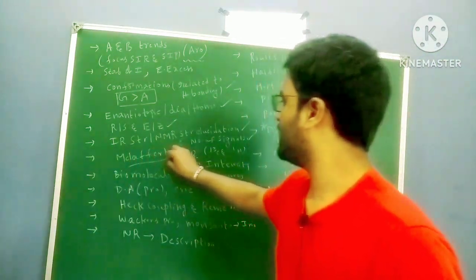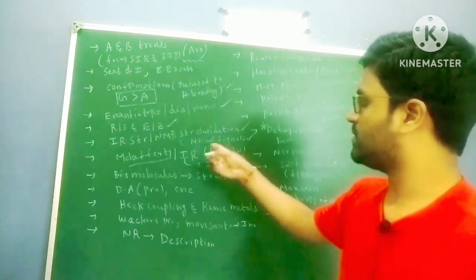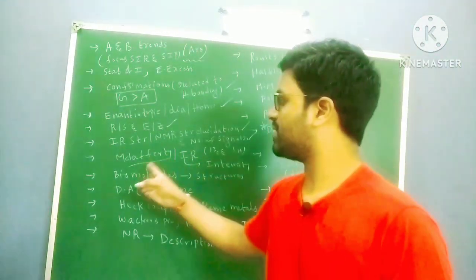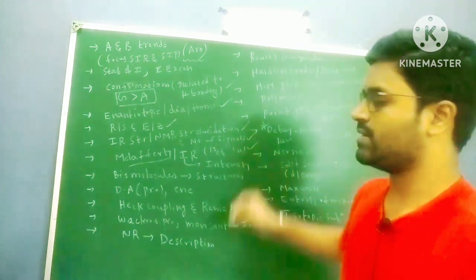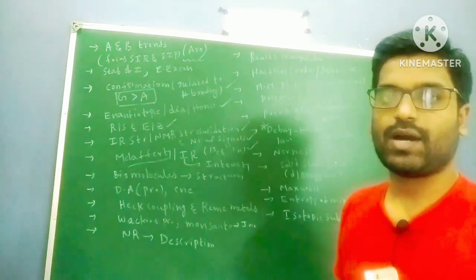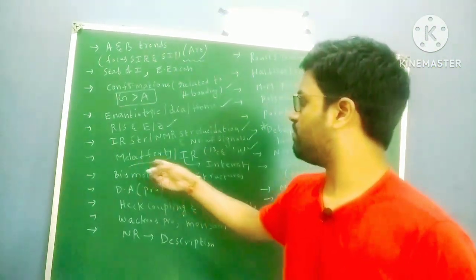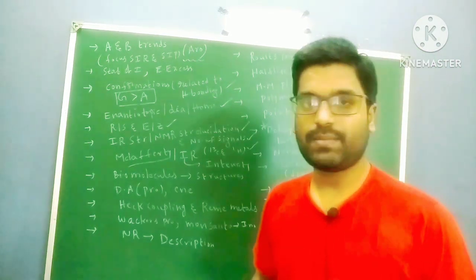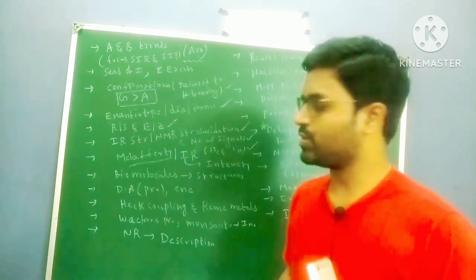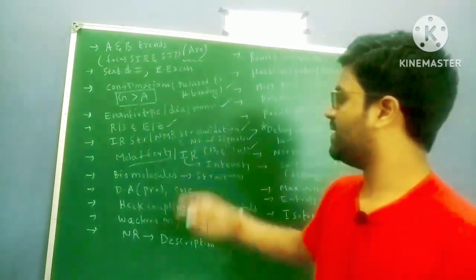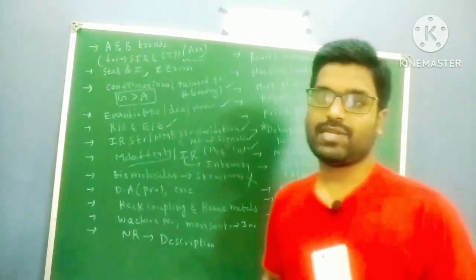Next, McLafferty rearrangement in mass spectroscopy — very important for both GATE and NET. Intensity ratio is also very important. For NMR, number of signals in both 13C NMR and 1H NMR — in 13C NMR you have to know how to count the number of signals. McLafferty rearrangement and intensity ratio: only practice questions on these two topics.